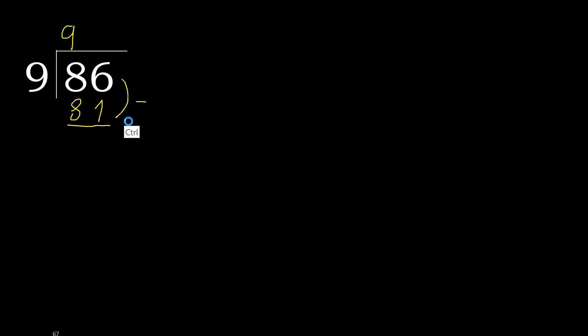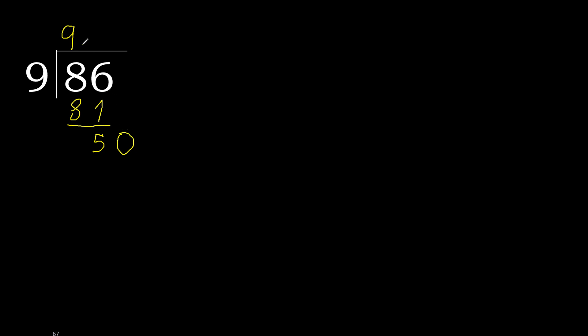Subtract: 86 minus 81 equals 5. Next, there is no number to bring down, therefore we always complete with 0. Here, place the decimal point and complete.